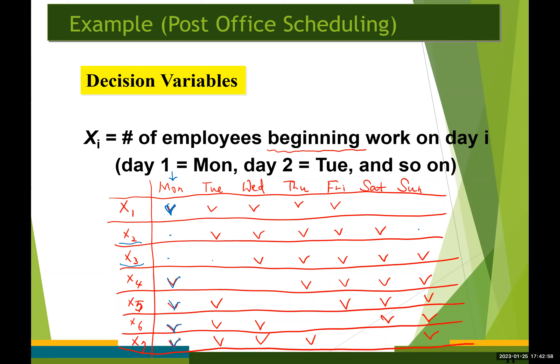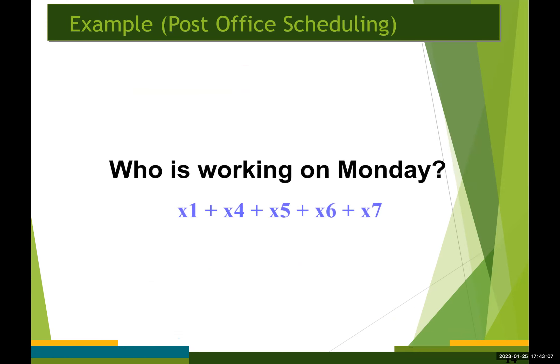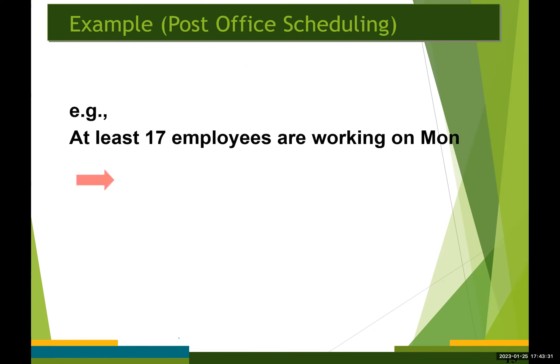We assume each full-time employee must work five consecutive days and then receive two days off. So the total number of employees working on Monday is x1 + x4 + x5 + x6 + x7. To ensure at least 17 employees are working on Monday, we require the constraint x1 + x4 + x5 + x6 + x7 ≥ 17. Adding similar constraints for the other six days and sign restrictions gives us a complete math formulation.